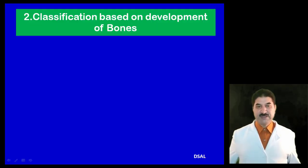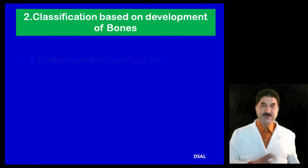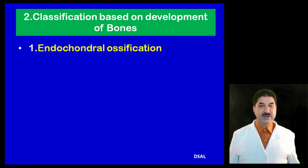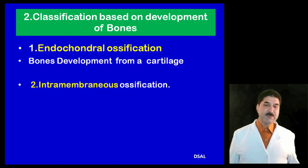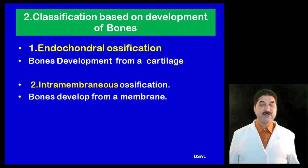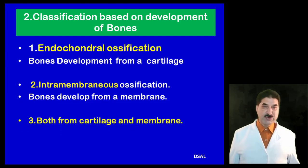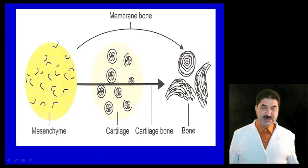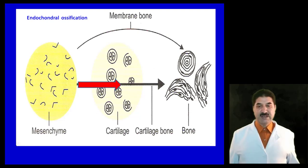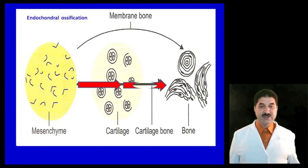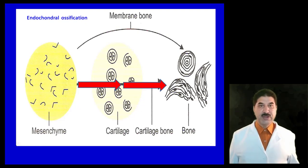The second classification of bone is based on development — where they originate. Endochondral ossification: endochondral bones develop from a cartilage model. Intramembranous bones develop from a membrane. Some bones develop from both membrane and cartilage. In endochondral ossification, the embryonic mesenchyme first changes into a cartilaginous model, and this cartilaginous model is later converted into bone. In intramembranous ossification, the embryonic mesenchyme is directly converted into bone, so bone develops directly from membrane.